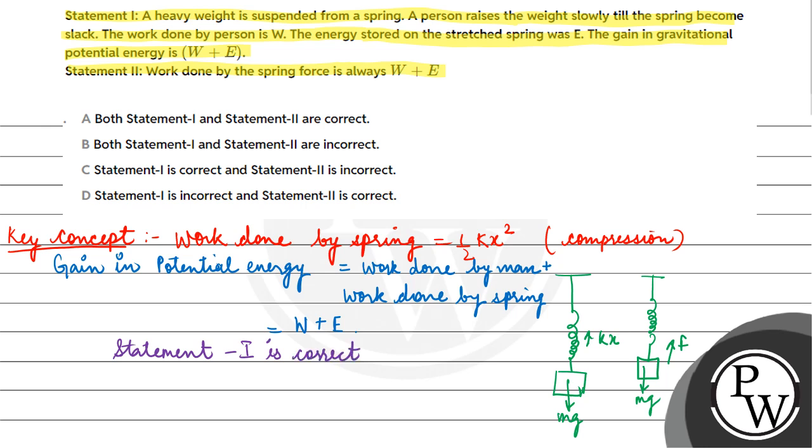We will talk about statement 2: that work done by the spring force is always W plus E. That is wrong. Work done by spring is half kx squared, plus or minus half kx squared, which depends on the compression.